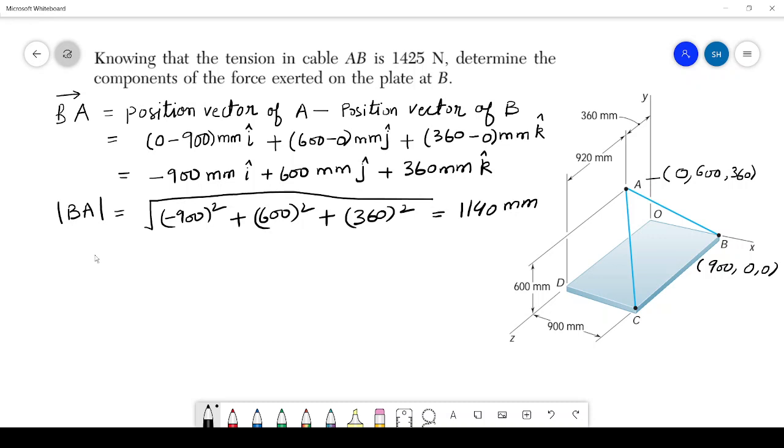Now for finding the component first we need to find the unit vector in the direction of BA, that is lambda BA, and that equals BA divided by the magnitude of BA. So this will be equals to minus 900 divided by 1140 i plus 600 divided by 1140 j plus 360 divided by 1140 k.